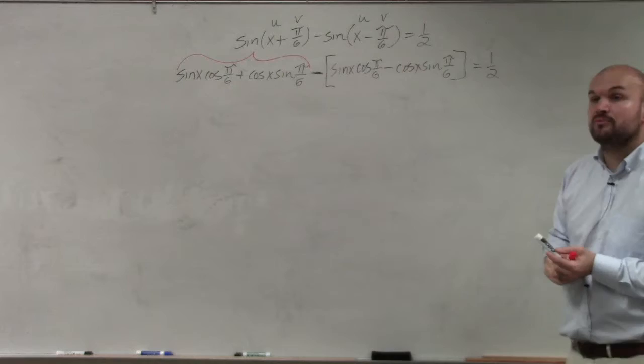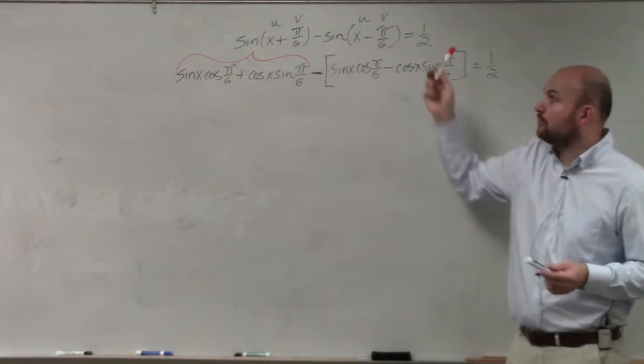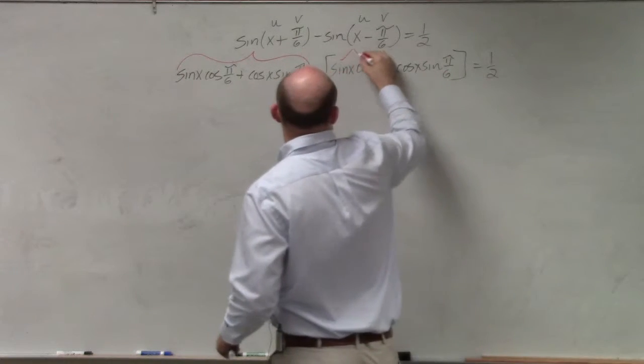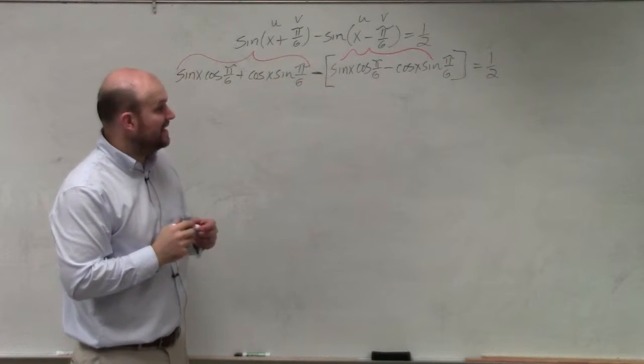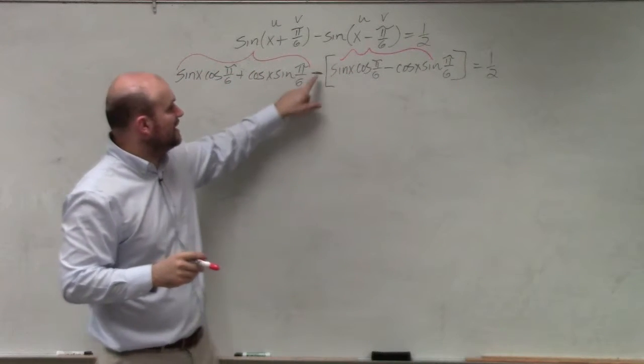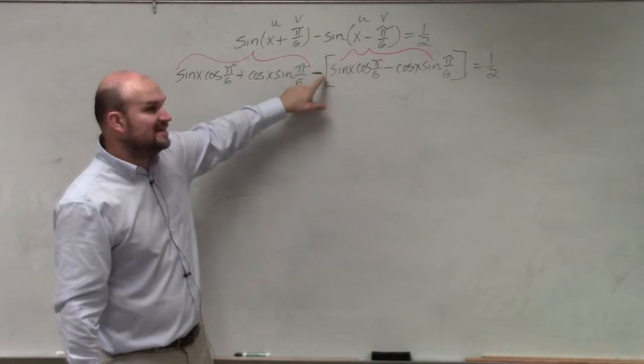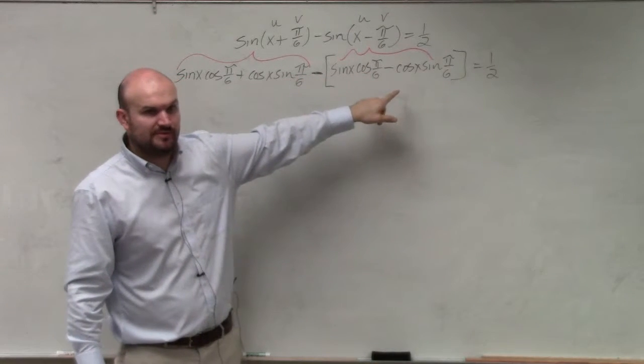The reason why I want brackets is because you're subtracting this whole thing. What's important is if I'm going to remove that bracket, I need to make sure I distribute this negative to both of these terms. Would you guys agree with me?